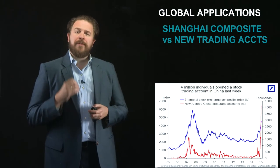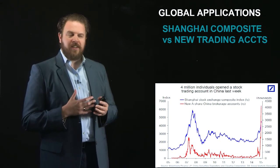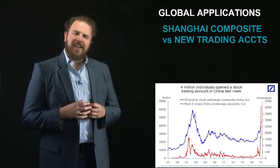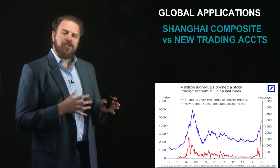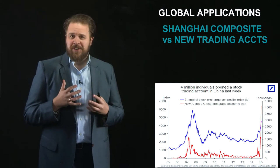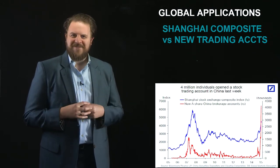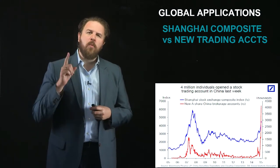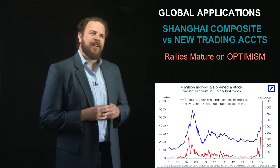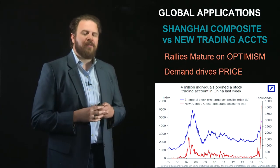This chart from Deutsche Bank focuses on the Chinese market in late spring 2015. The blue line represents the Shanghai Composite Index, which offered no return to investors for almost five years, then doubled in less than a year in late 2014 through 2015. The red line shows new A-share brokerage accounts coming into the market — more than 4 million new accounts in one week. That's an enormous amount of demand for Chinese equities. These rallies mature on optimism and expire on euphoria because demand drives price.